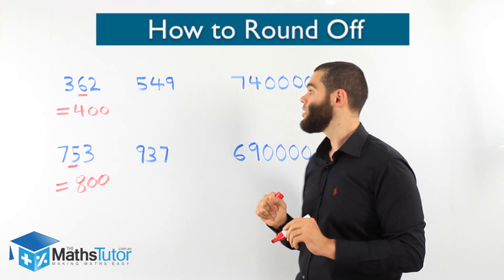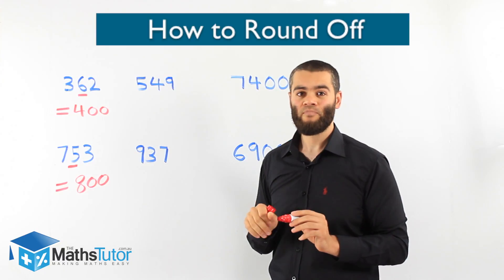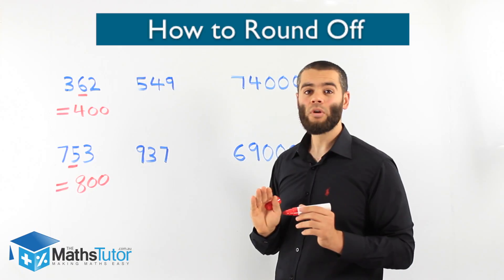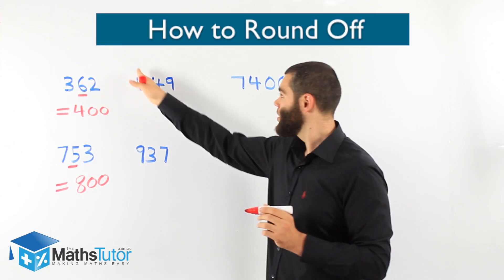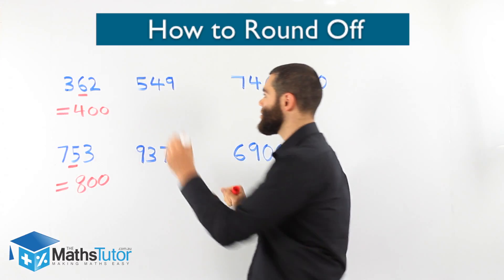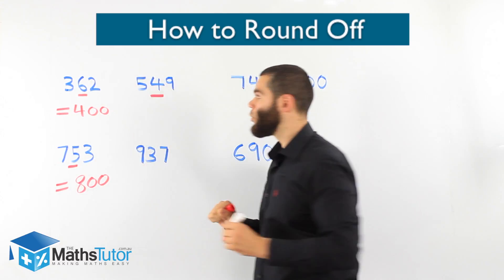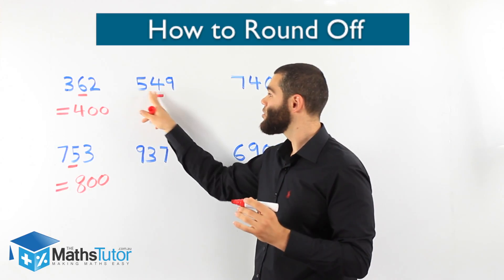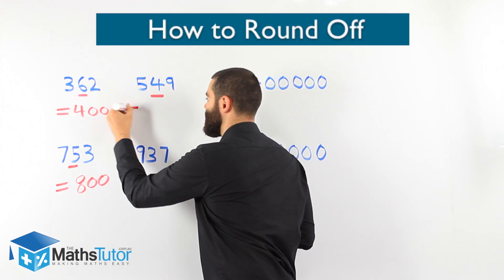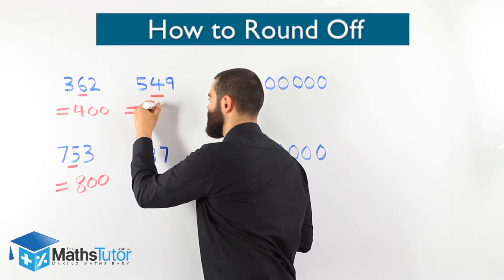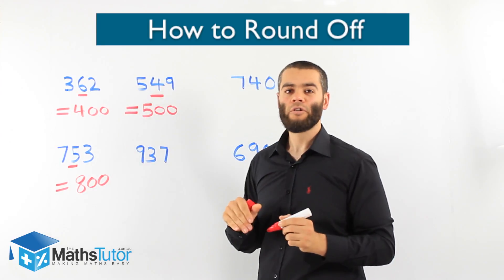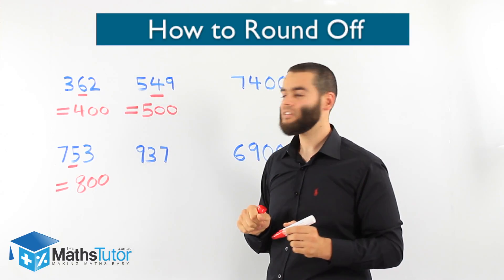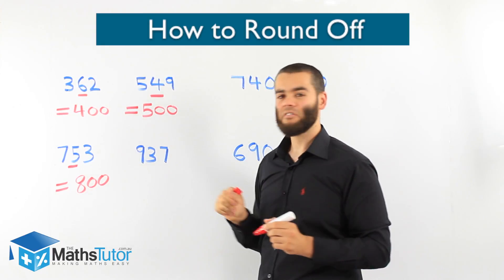Another example: 549. We're going to round it off to the nearest hundred. We look at the number on the right of the hundreds column. The number on the right is a 4. We notice this 4 is less than 5 — it doesn't have muscles to push us up. So we round down. It becomes 500. Instead of 549, we go down; it doesn't have enough muscles, so we round down. The answer to the nearest hundred is 500.